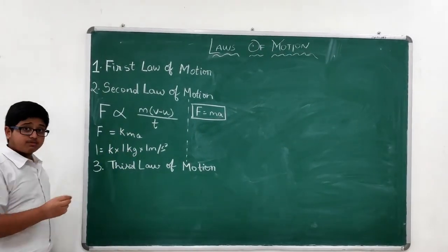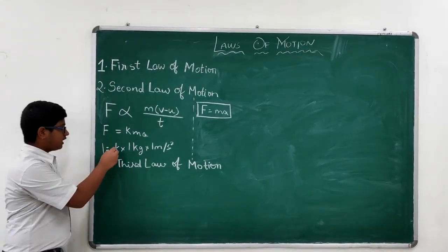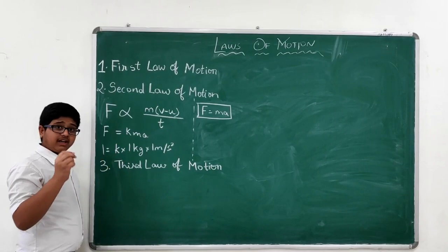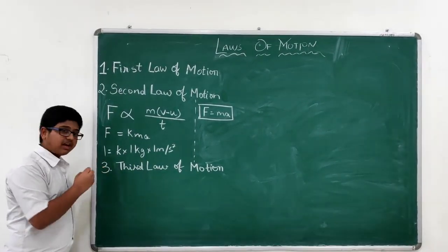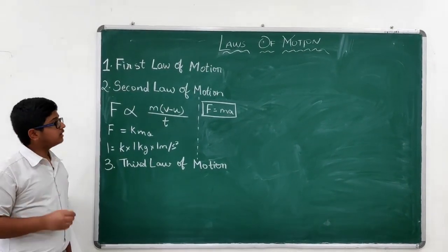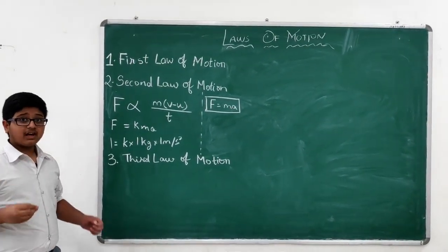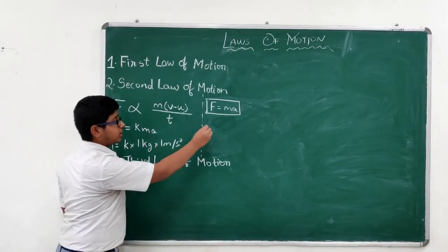Let force be 1 Newton. 1 Newton is equal to K into 1 kg of mass into 1 meter per second square acceleration. Now, what will we get? K is equal to 1. Then, by this, we can confirm that F is equal to M into A.